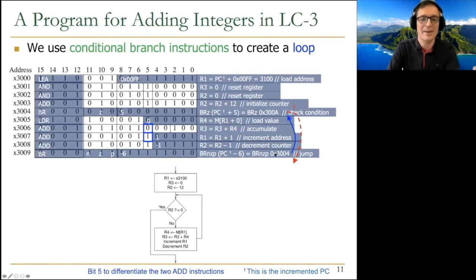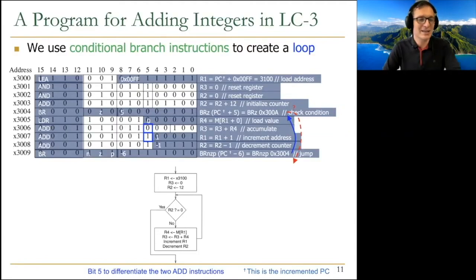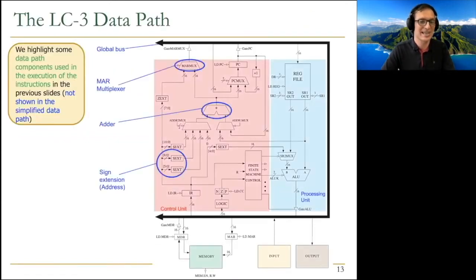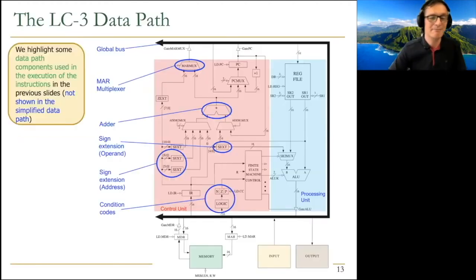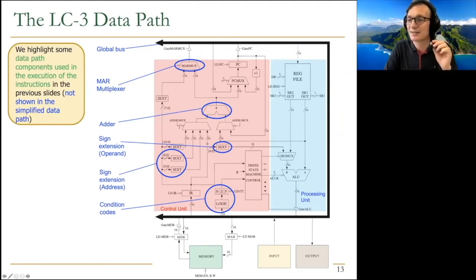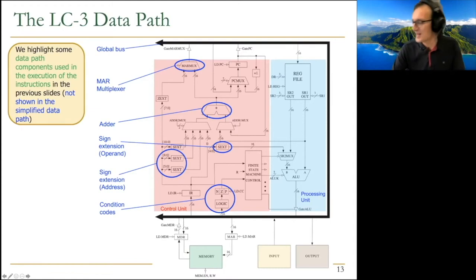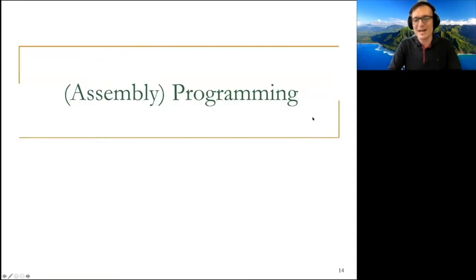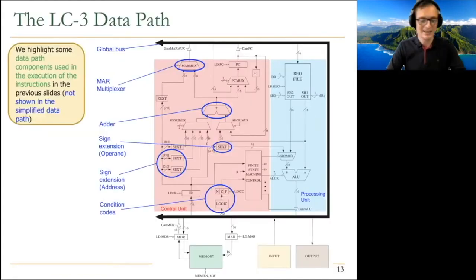The key point in assembly programming is getting the branches right. You should branch back to address 3004 to check the condition first — not to the load instruction — because that's the loop exit point. You know exactly how to execute all these instructions in the LC3 data path. Everything we've seen in this program was already covered in the execution of the LC3 data path.